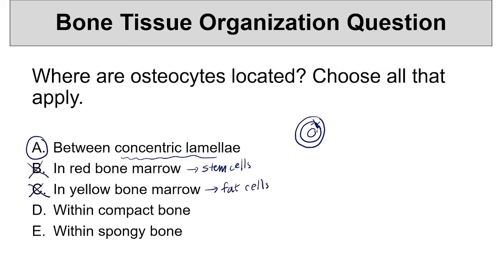The final two options are compact and spongy bone. Compact bone forms the outer shell of a bone, or the cortex, and spongy bone is found lining the medullary cavity and within the ends of bones. Do these tissues contain osteocytes? Yes — both are bone tissue, so both contain osteocytes that maintain the daily metabolism of bone.